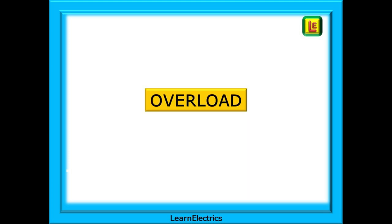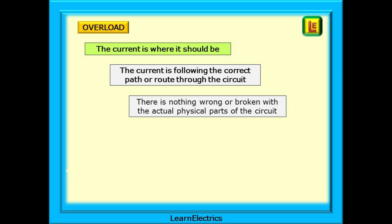We can begin by looking at overload. This sounds like overcurrent but don't get them confused. Overload is just one type of overcurrent. With an overload, the current, the electricity, is exactly where it should be. The current is following the correct path, the correct route through the circuit to the appliances. There is nothing wrong or broken with the actual physical parts of the circuit. The cables are still in the correct places, the joints are still tight and the appliances are still working correctly.